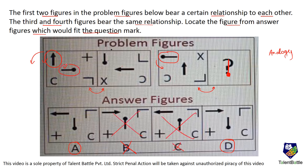Now observe the center part - it gets shifted to the top left corner. So it gets moved in the clockwise direction by 90 degrees. If this element is there, it will get moved clockwise by 90 degrees and come over here, like a 90-degree clockwise turn. This is possible only in option D, so option D is the answer and option A gets cancelled out.